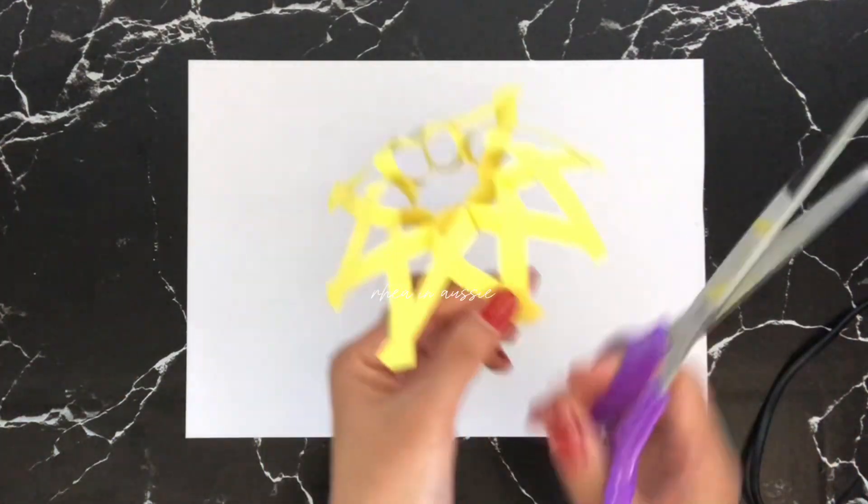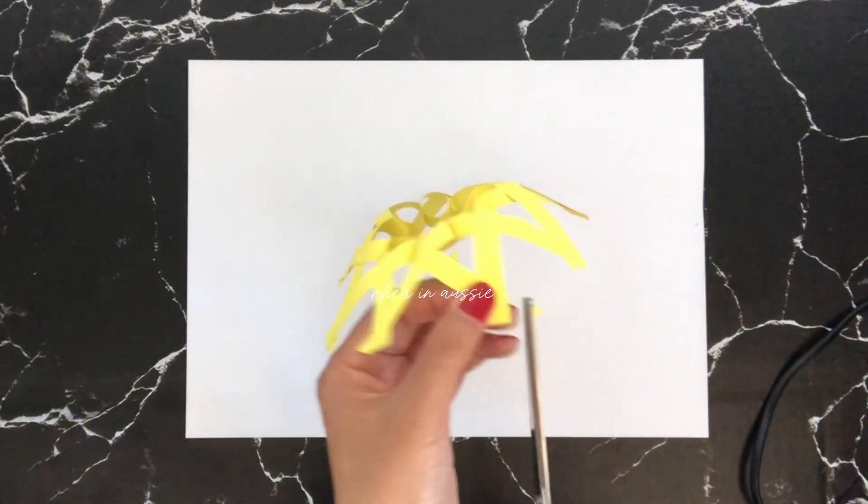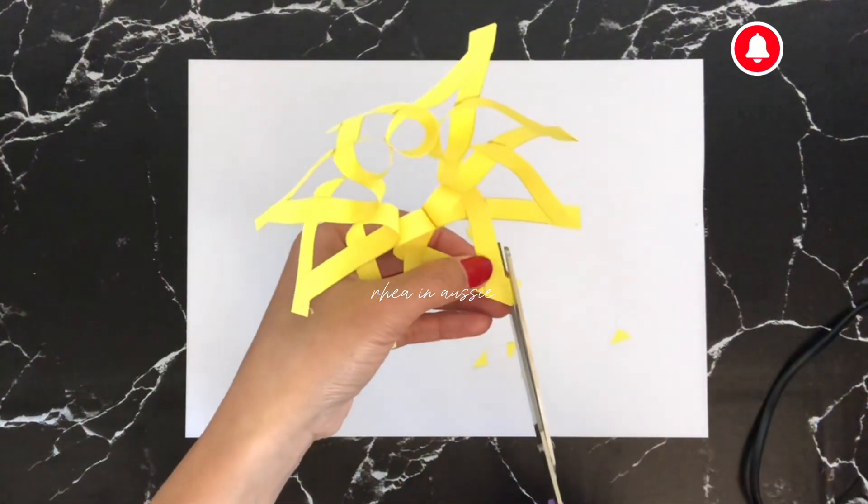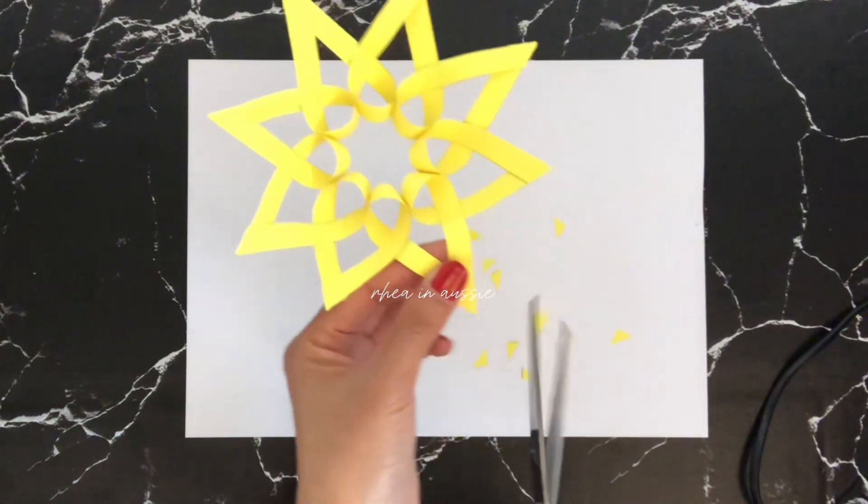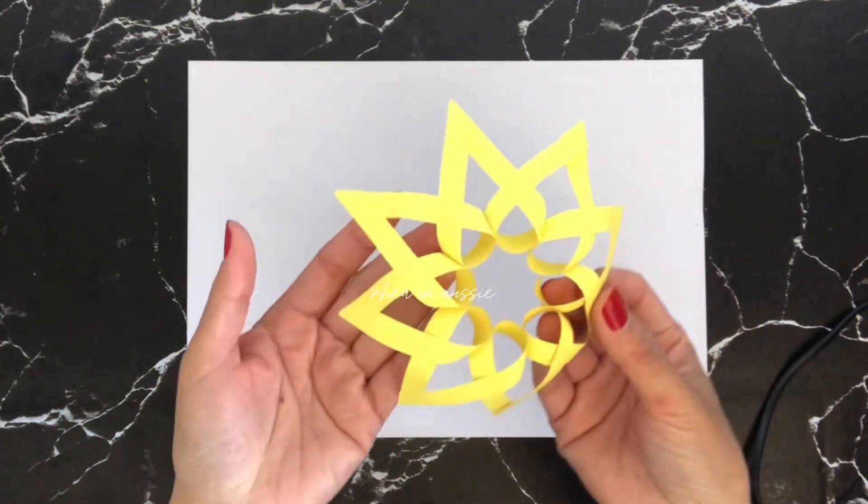And then we're going to cut the excess papers on the ends. It will look like this.